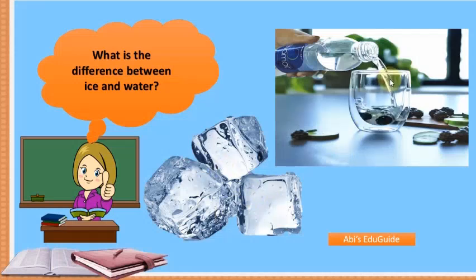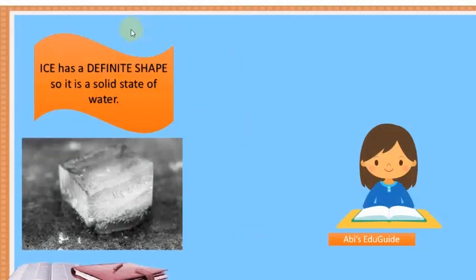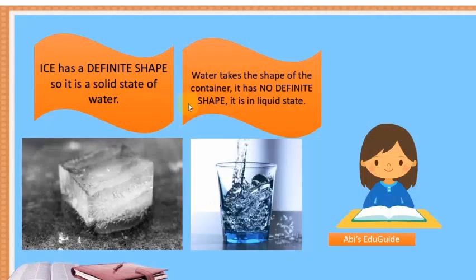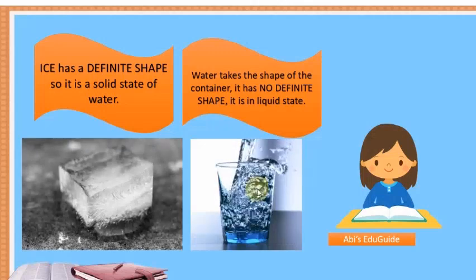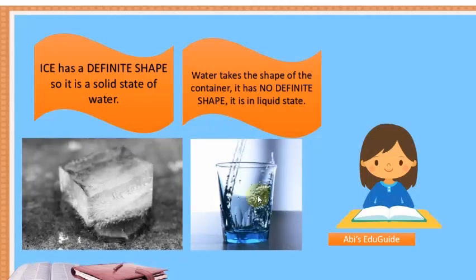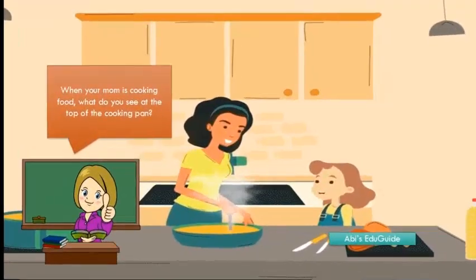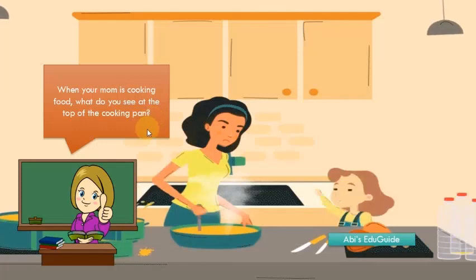What is the difference between ice and water? Look at these images. Ice has a definite shape, so it is a solid state of water. Water takes the shape of its container — it has no definite shape, so it is in a liquid state.